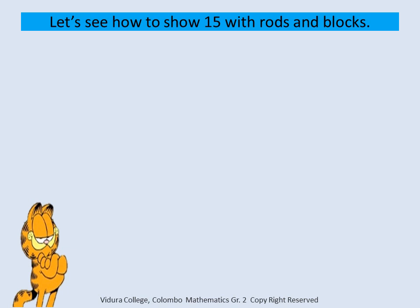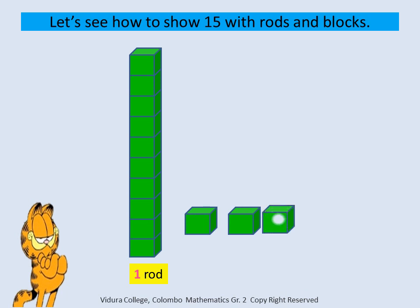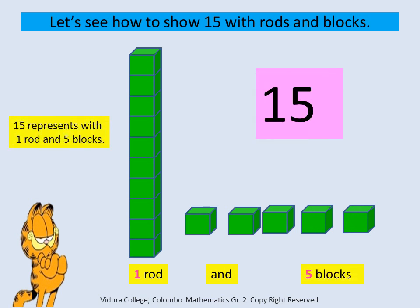Let's see how to show fifteen with rods and blocks. One rod: one, two, three, four, five blocks make fifteen. Fifteen is represented with one rod and five blocks.